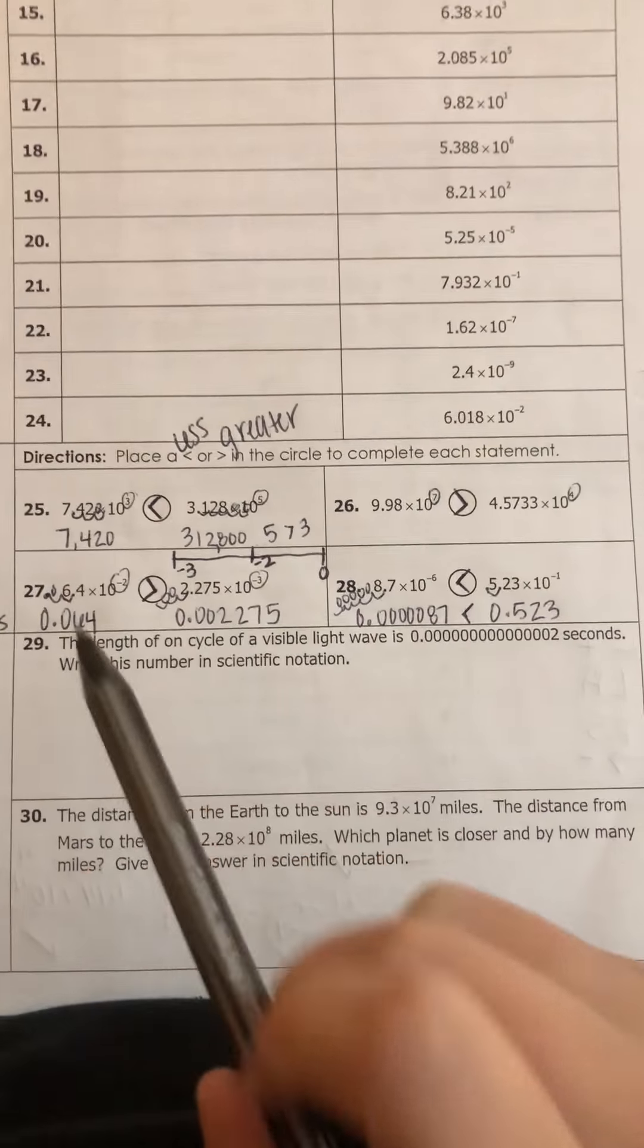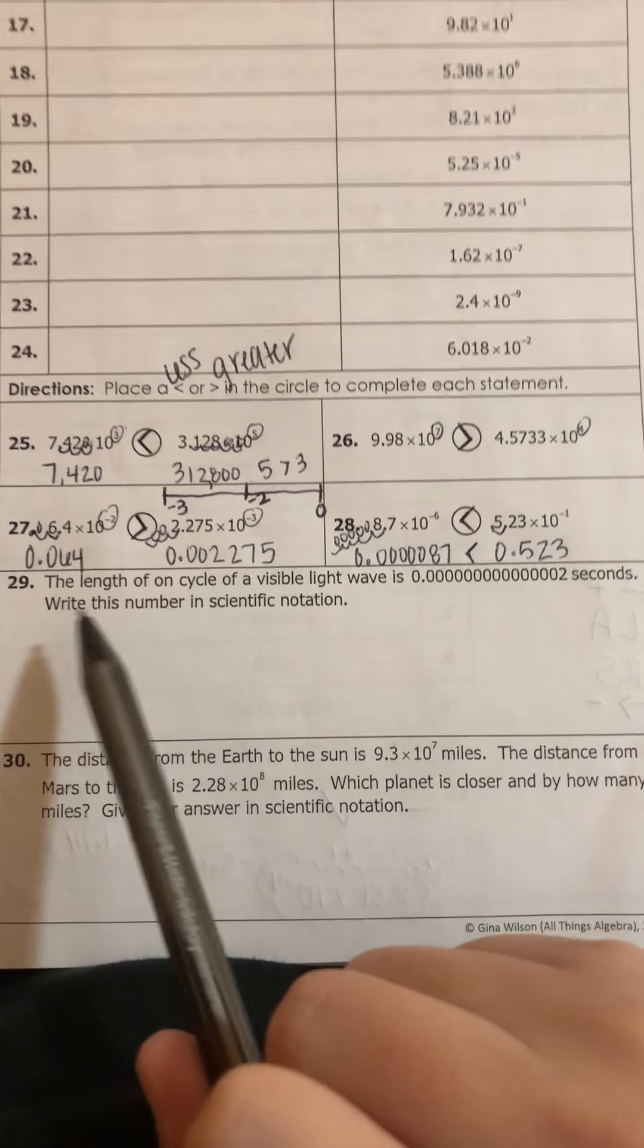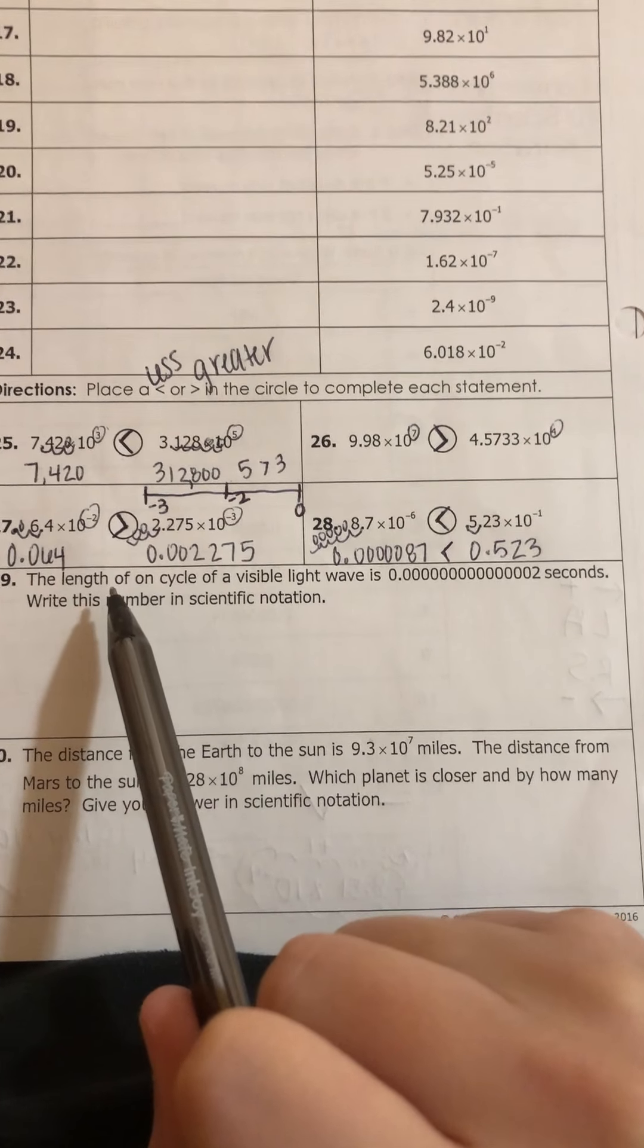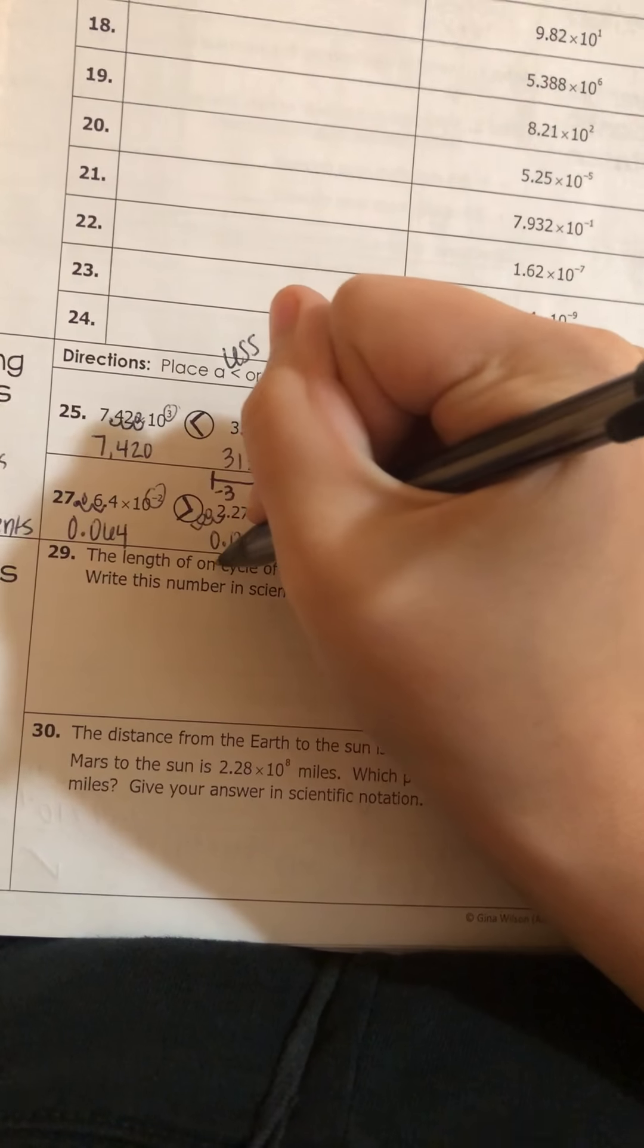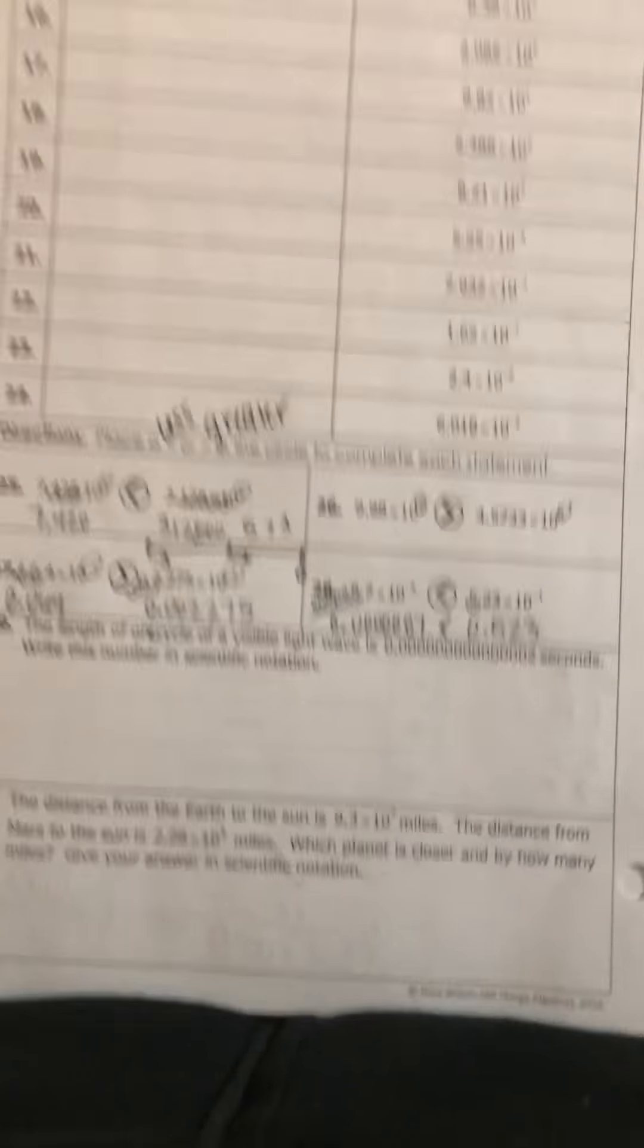Okay. For the word problems, we have to figure out what it's asking us. So it says the length of, this should say 1 cycle of visible light waves, which we did in science.